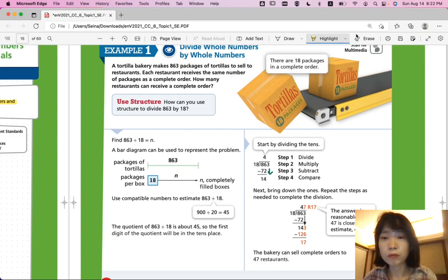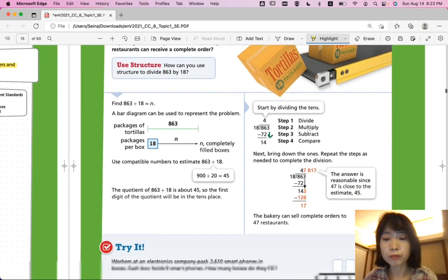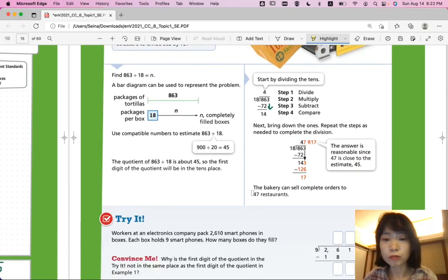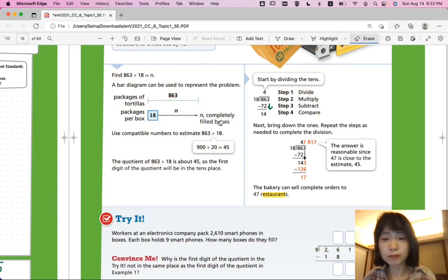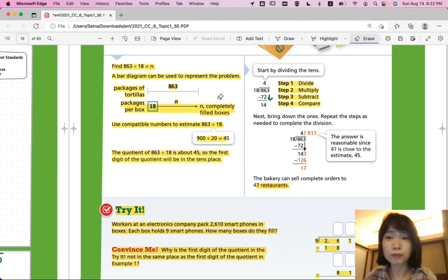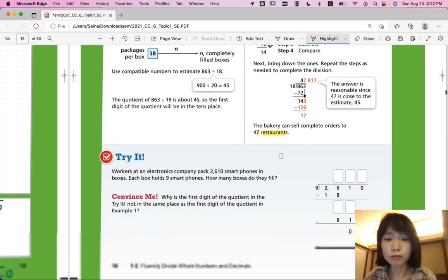The bakery can sell complete orders to 47 restaurants.